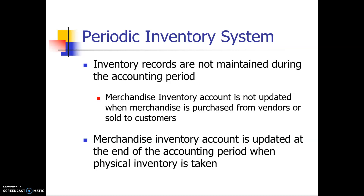At the end of the period, when we count up our merchandise inventory, we then update the merchandise inventory account and force it to have a balance equal to what our physical inventory has shown we have in merchandise inventory at the end of the period.